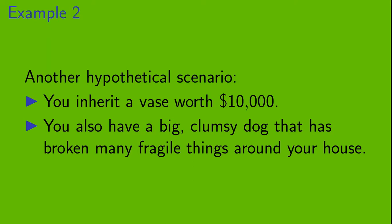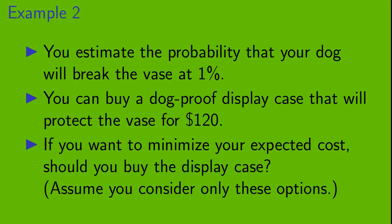Let's look at another hypothetical scenario. Let's say that you inherit a vase worth $10,000. But you also have a big clumsy dog that has broken many fragile things around your house. You estimate the probability that your dog will break the vase at 1%. Now, you can buy a dog-proof display case that will protect the vase for $120. If you want to minimize your expected cost, should you buy the display case? And let's assume that the only two options you're considering are buying the display case or doing nothing.